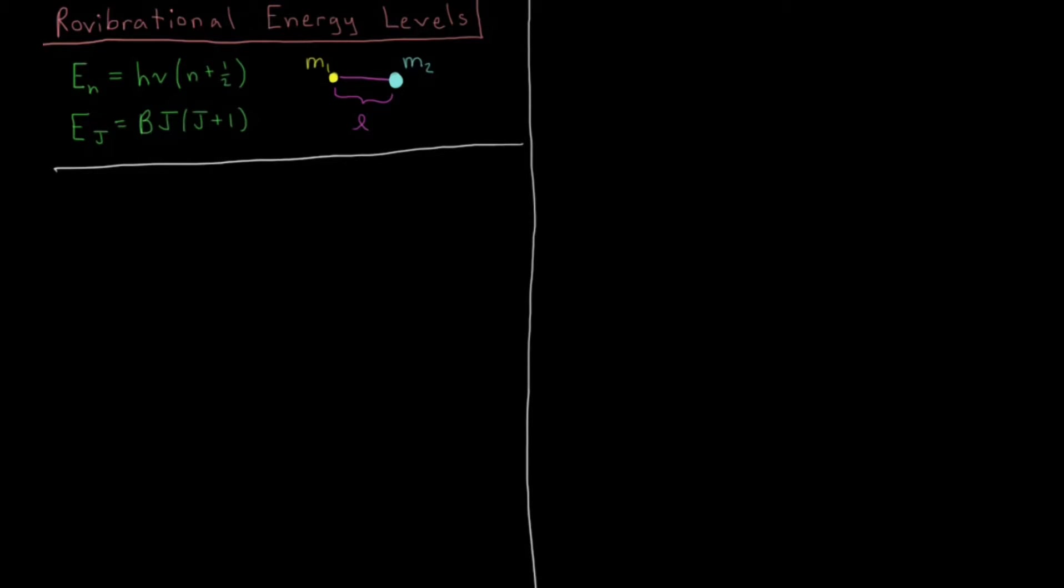In this video we're going to talk about the interaction between rotations and vibrations for a diatomic molecule. So we've seen a model of the vibrations of a diatomic molecule, the harmonic oscillator, and we've seen these energy levels, just Planck's constant times some vibrational frequency times n plus 1 half.